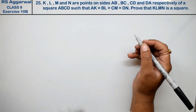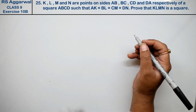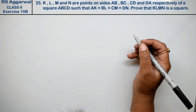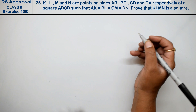Let's do question number 25 of exercise 10b, that is quadrilaterals. Question number 25: K, L, M and N are the points on the sides AB, BC, CD and DA respectively of a square.